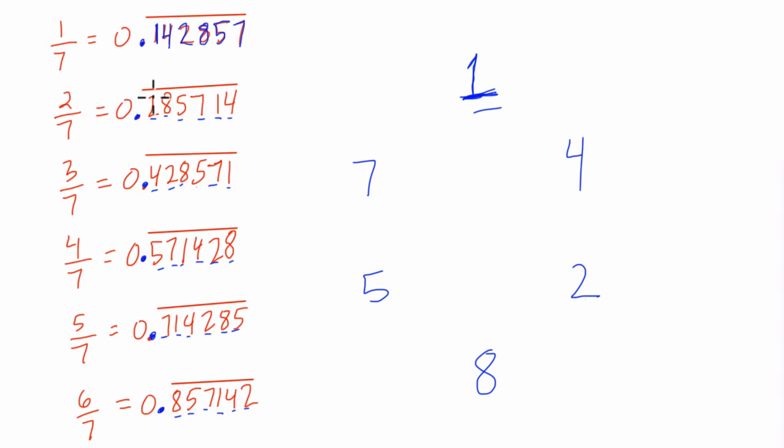Does the second one also kind of fit the circle? 2, 8, 5, 7, 1, 4. Let's see. What happens if we start at 2 now for 2 sevenths? It goes 2, 8, 5, 7, 1, 4. That's what we have here: 2, 8, 5, 7, 1, 4. So it seems that if we follow this circle here, kind of like a clock, we're able to find the order of the digits. Could it be that simple?